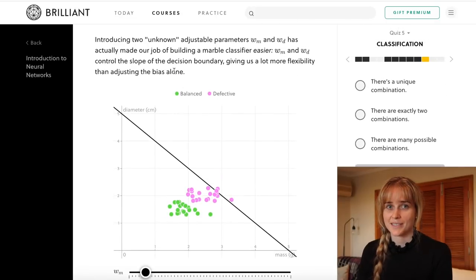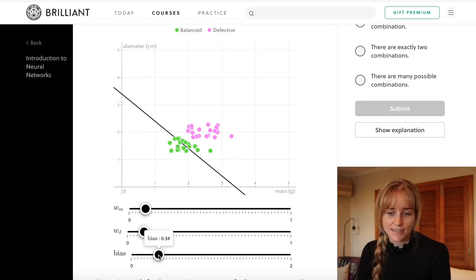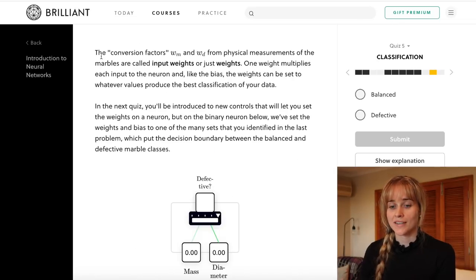This gives us more flexibility than just being able to adjust the bias alone. See, only adjusting the bias would never really be able to get a good fit here.